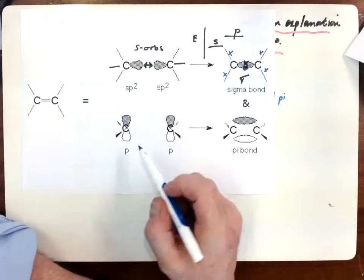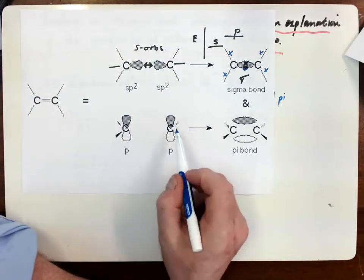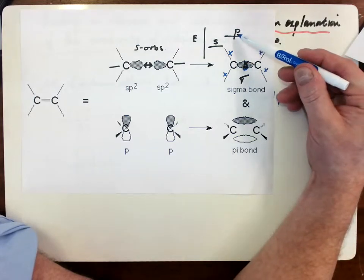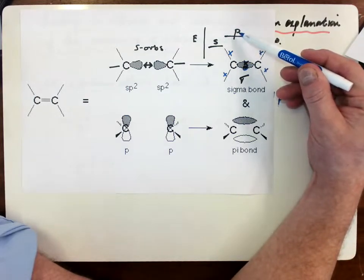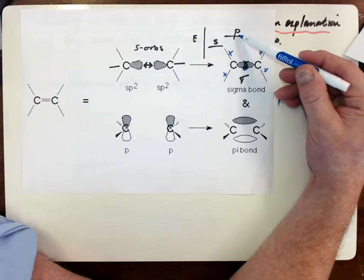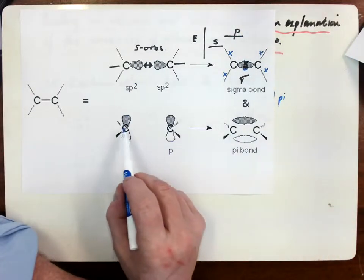And that electron is residing here in these dumbbell-shaped P orbitals. And if you remember, compared to S orbitals, P orbitals sit further away from the nucleus and are held less strongly by the protons within the nucleus.